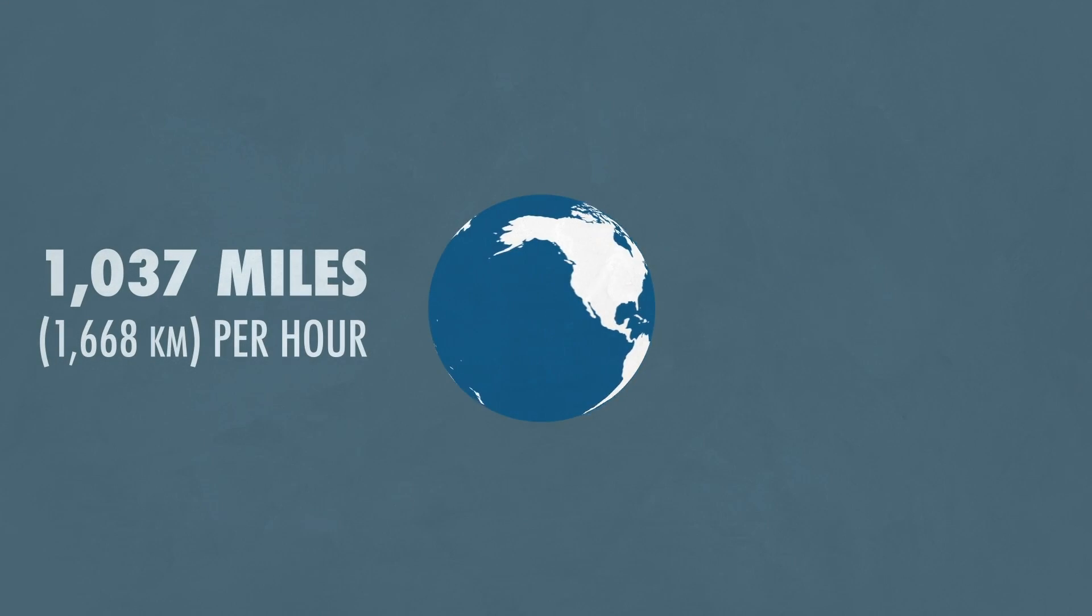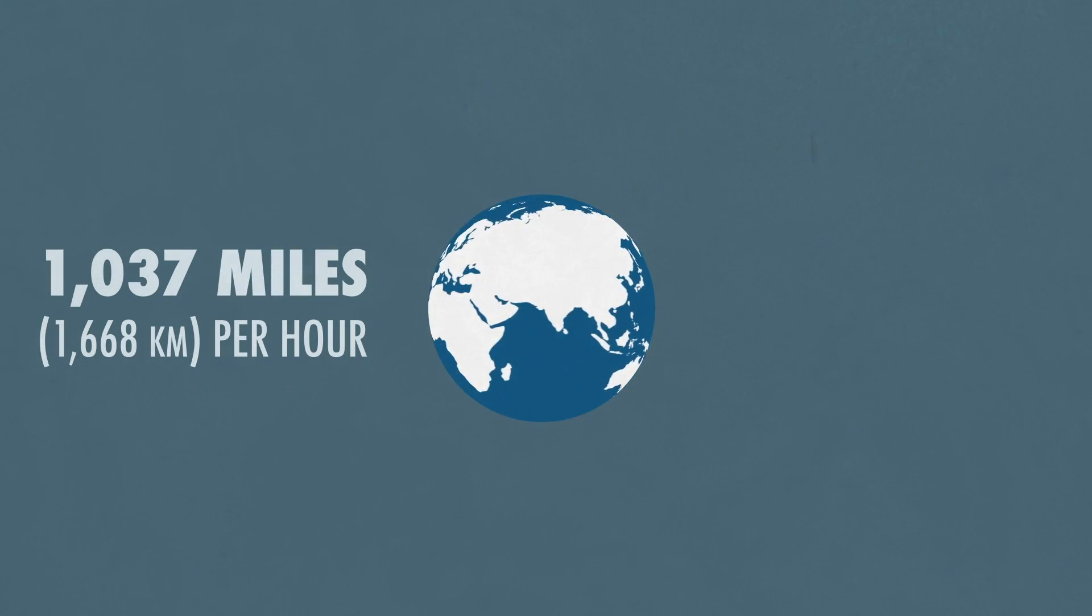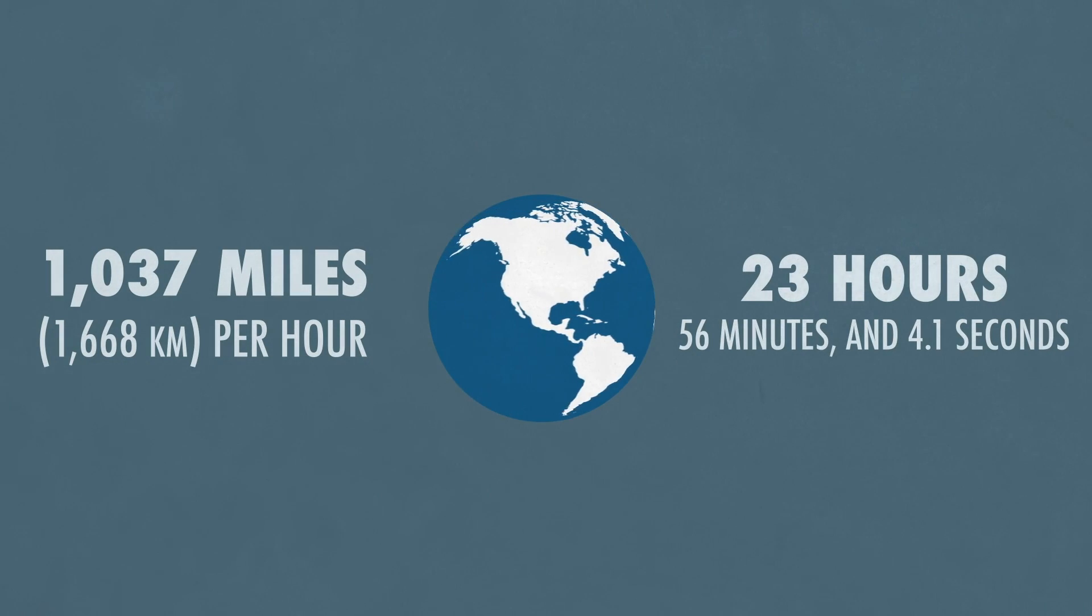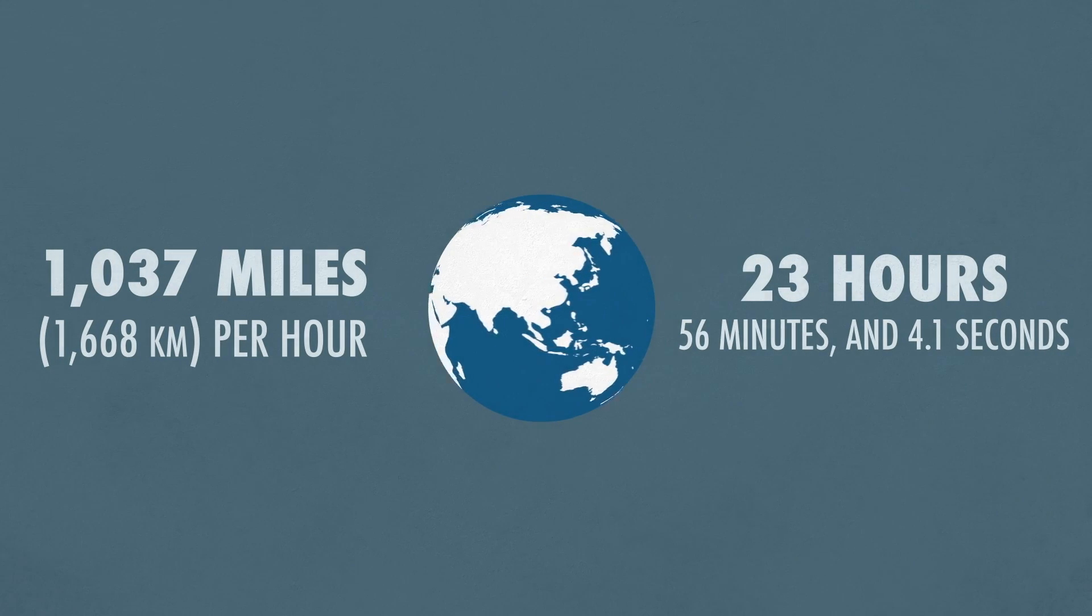Currently, the Earth spins at about 1,037 miles or 1,668 kilometers per hour, which means that one day, or the time to complete one full rotation, is 23 hours, 56 minutes, and 4.1 seconds long.